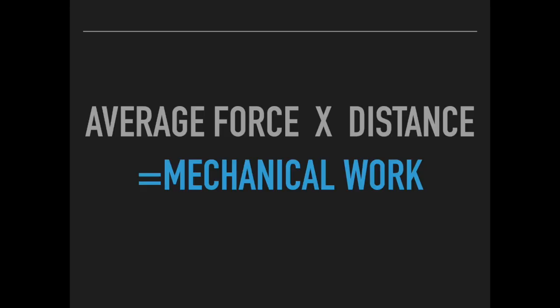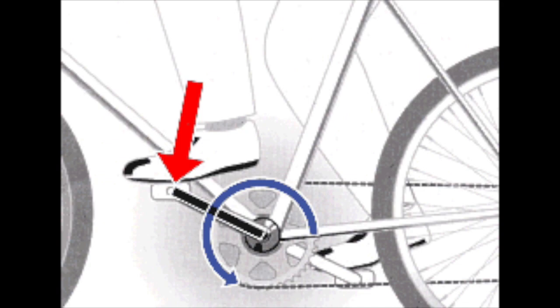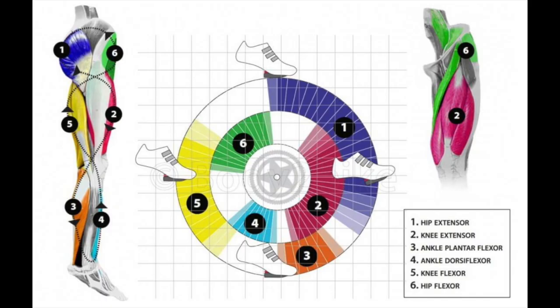During cycling, mechanical work is equal to the average force that is applied to the pedal, multiplied by the distance over which it is applied. We can identify two opposite forces — the downward slope and the upper trajectory of the shafts — as they revolve around the axis of rotation at the cranks. The kinematics of the lower body joints and skeletal muscles provide the source for the mechanical work. Thus, the greater the work done, the better the performance.